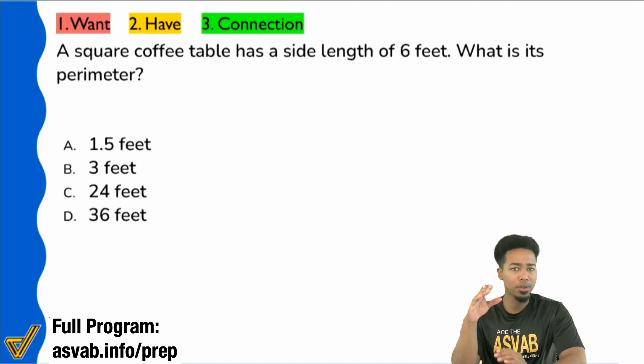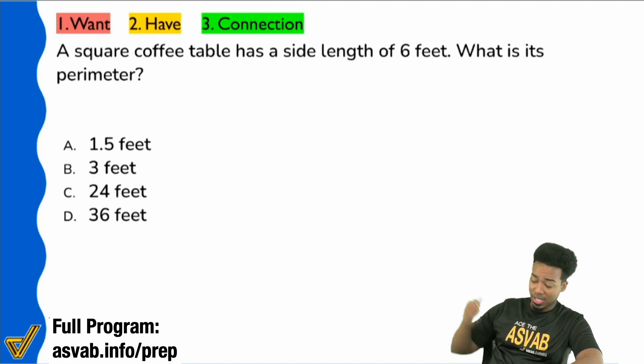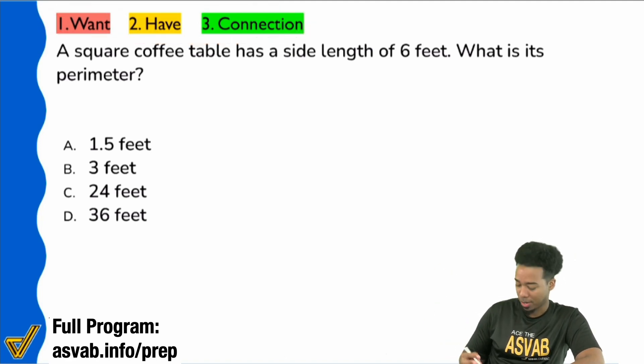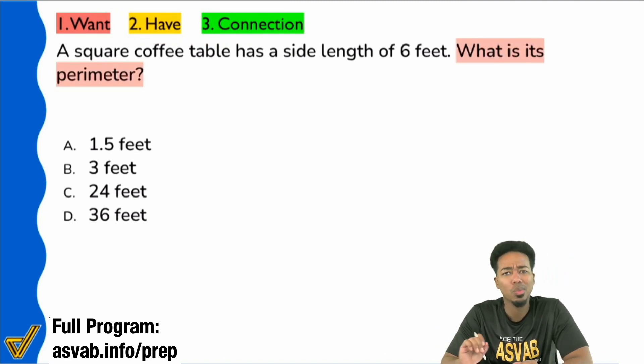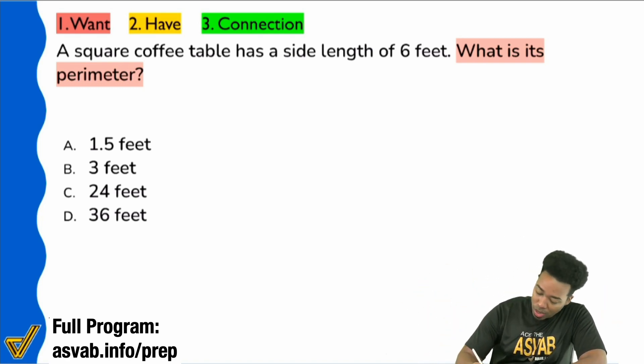For those of you that are here for the first time, the first thing you want to do is identify the question. What do I want? You're gonna see that up here at the top left a ton. But the first thing you want to do is ask yourself, what the heck do I want? Why am I doing this problem? What is the solution to this problem? What do I want to end up with? Think about it like life. What am I trying to do? What am I trying to get done? You don't want to waste time. So right there, what is its perimeter?